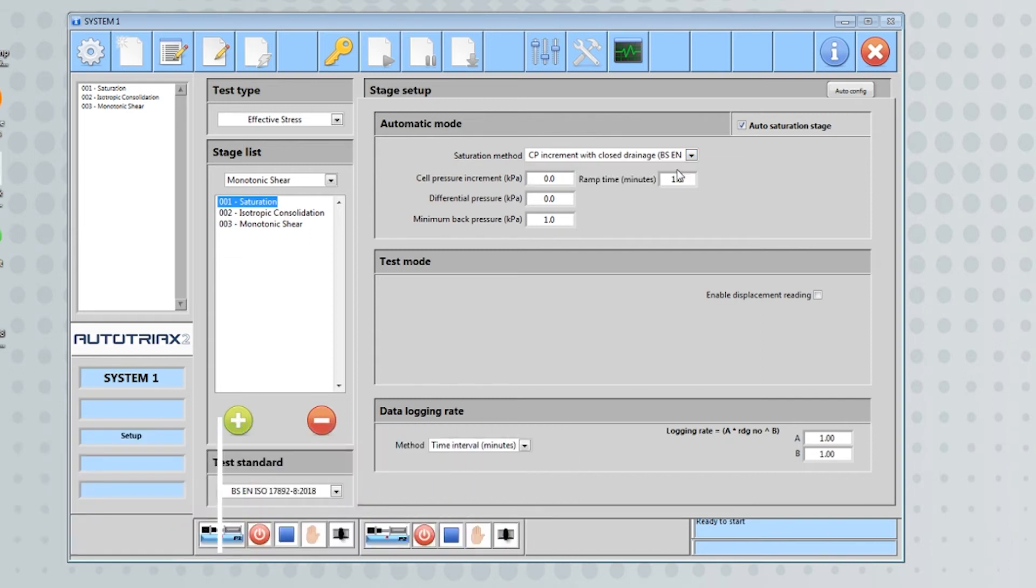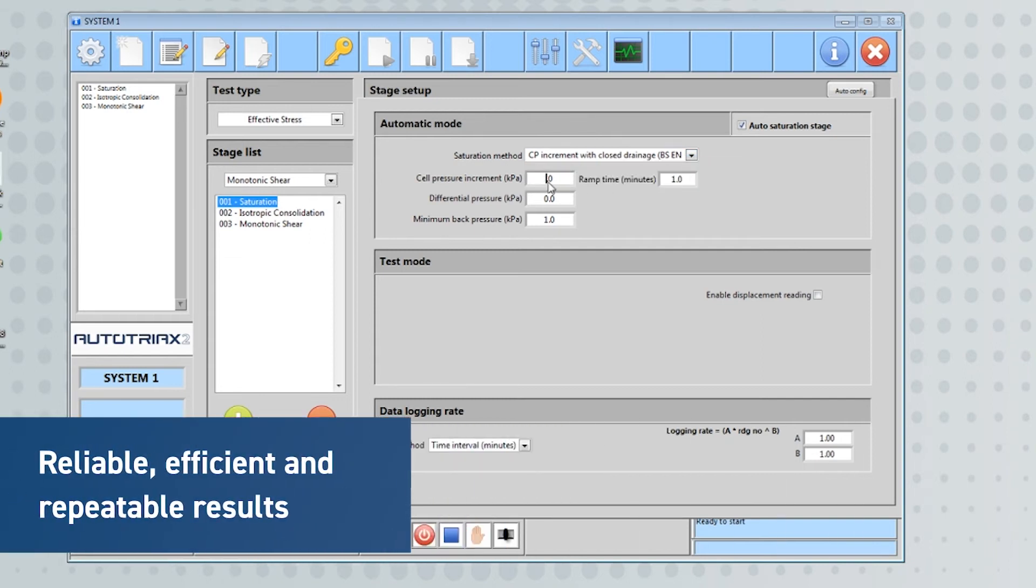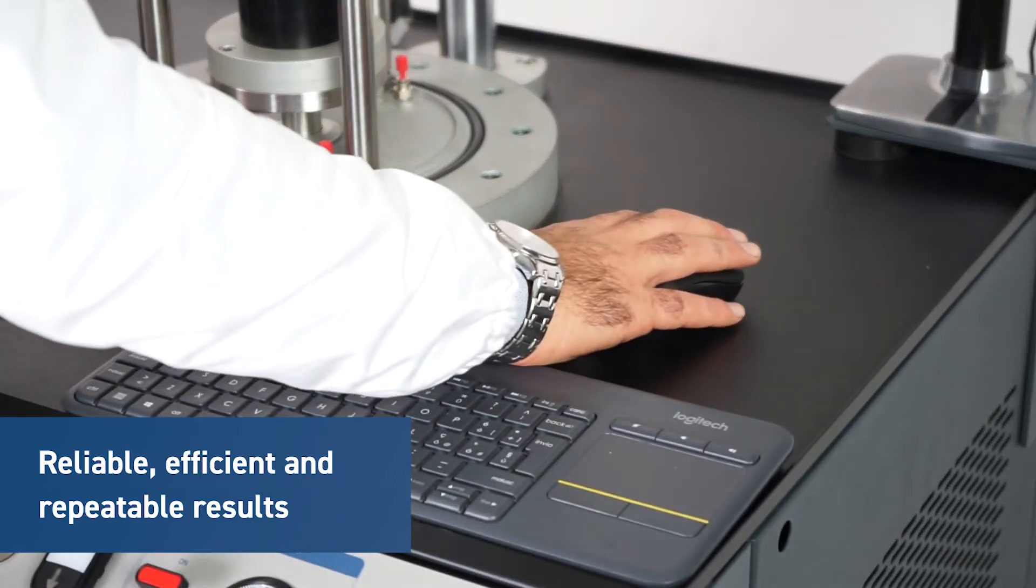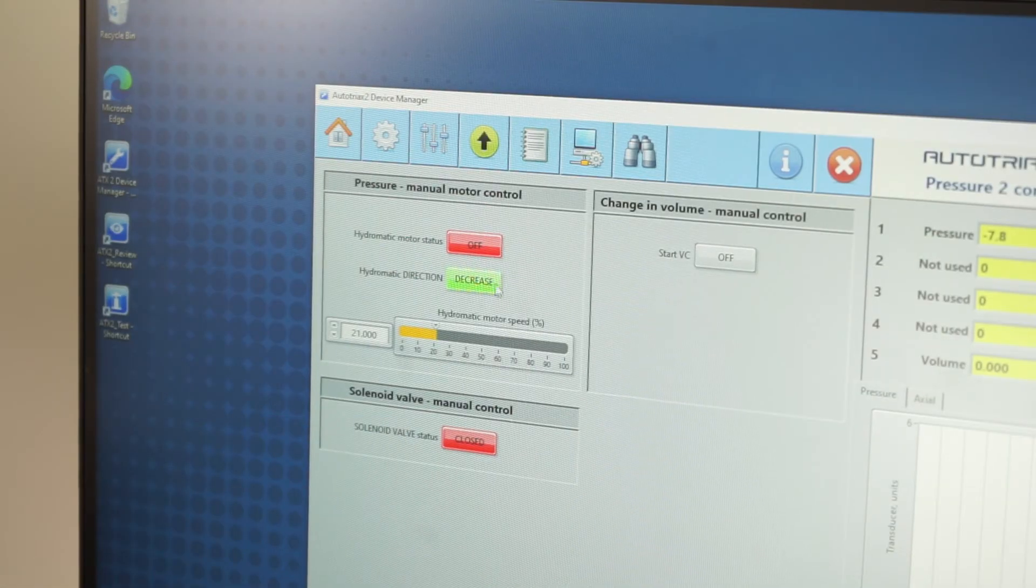The system can also be controlled in manual mode, as is typically required in research, to retain manual control over the triaxial testing procedure.